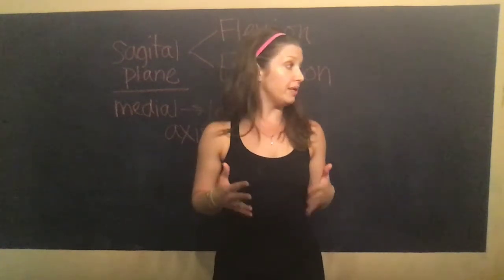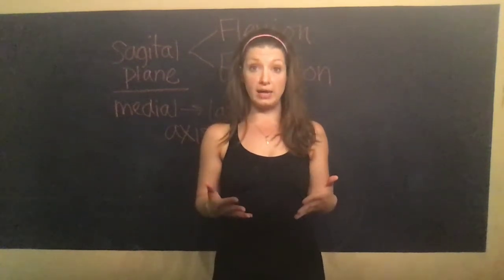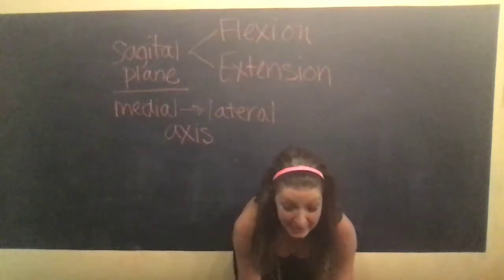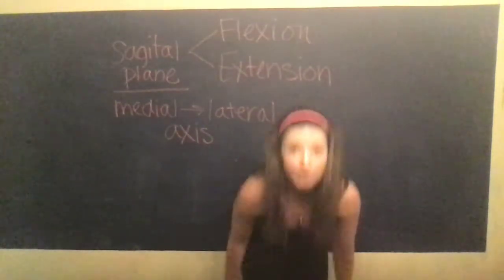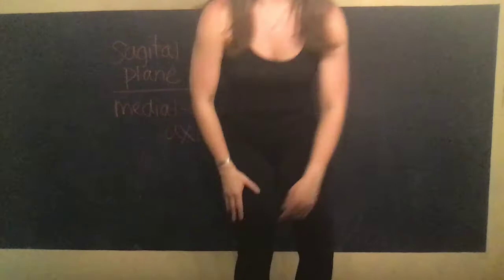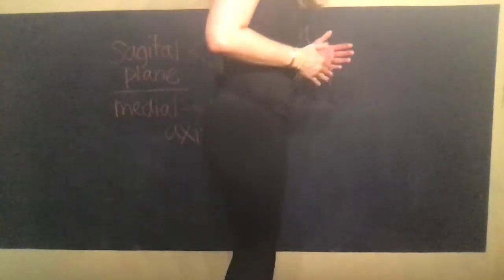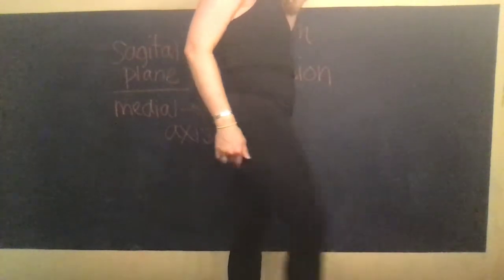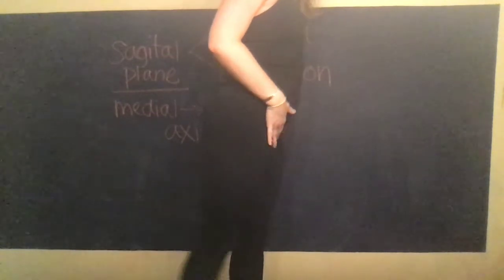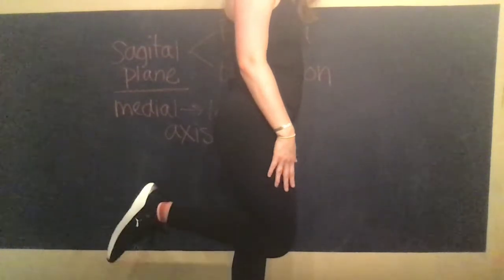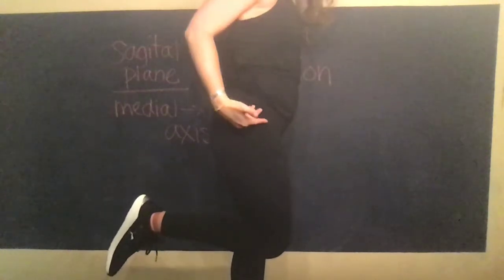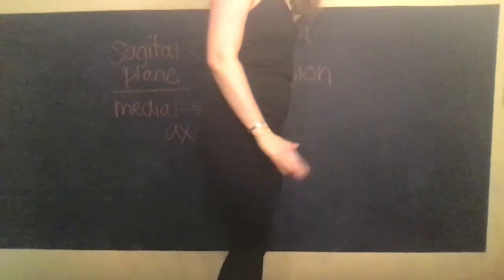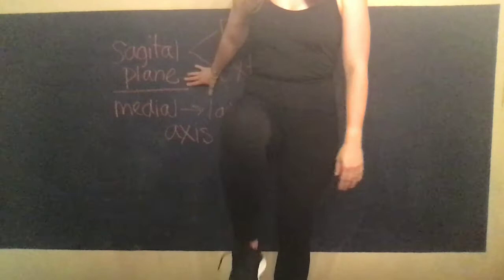Think about the other joints within the body — flexion and extension. I'm going to stand on my bench to show you the lower extremity examples. So we've got hip flexion, extension, hyperextension. With my knee, I've got flexion — I'm leaving anatomical position — and then I've got extension returning.